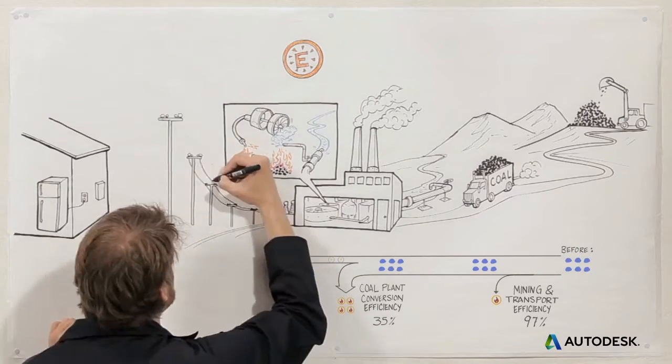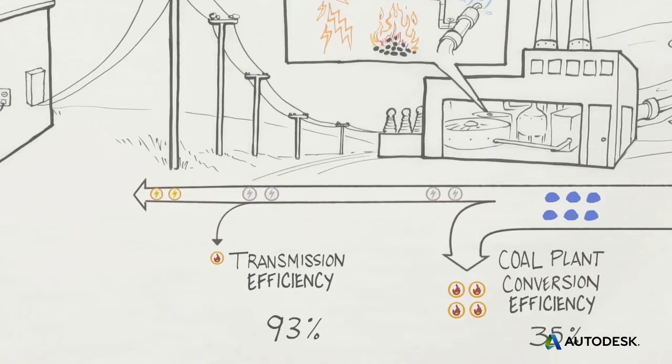Then the electricity in your fridge gets to your home over high voltage power lines, which are 93% efficient.